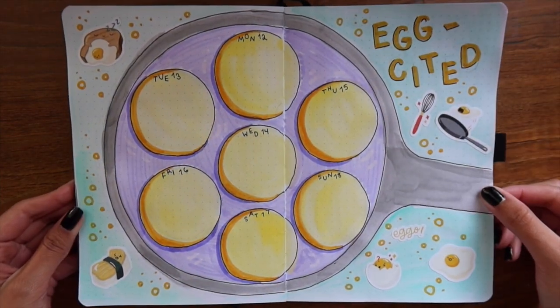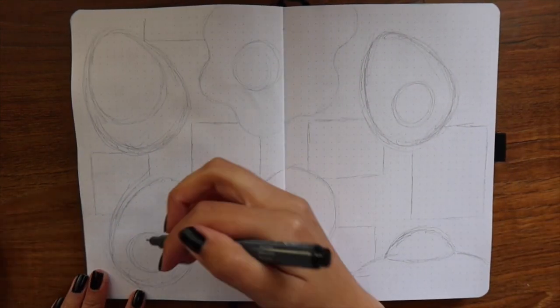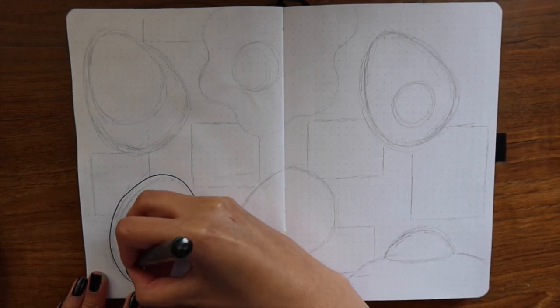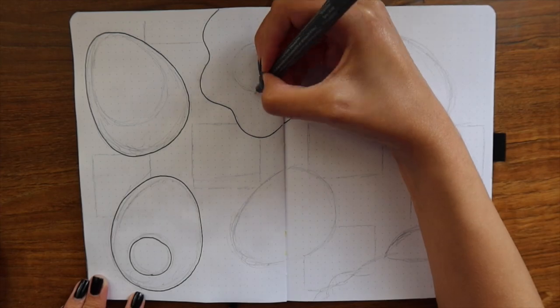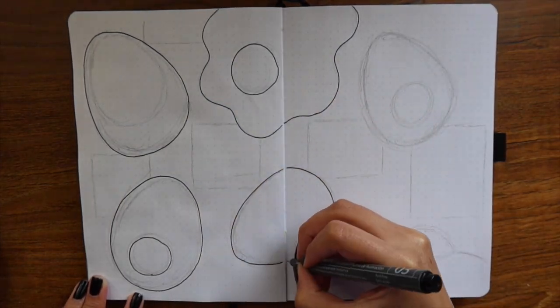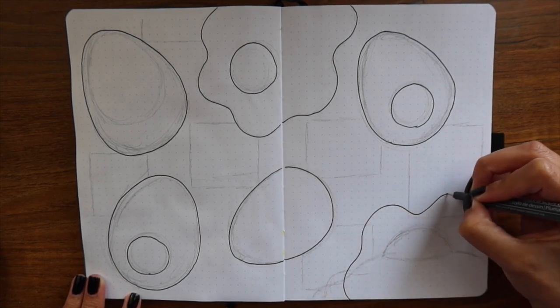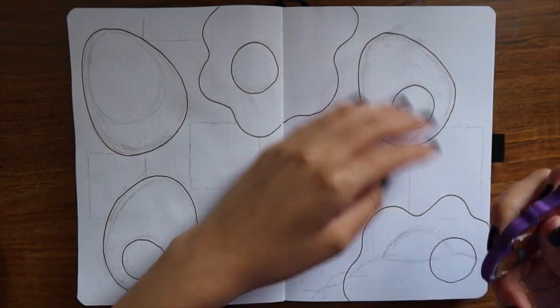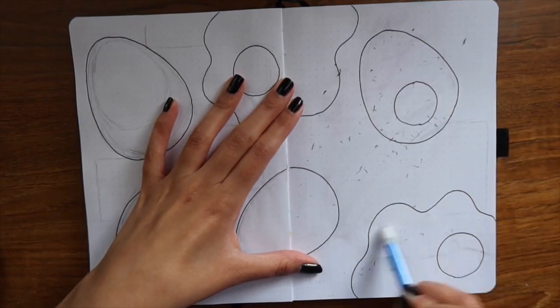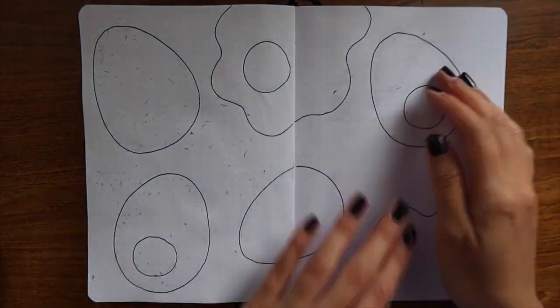For the next week of April, which is week three, I decided to make this weekly spread egg-themed, of course, since we're still going with that theme. I wanted each day of the week to be a different kind of egg. I couldn't really think of that many different kinds of eggs—only the ones you see here. I included an egg in its most basic form, which is just an egg still in its shell, and then we also have the sunny-side-up eggs. I included two of those.